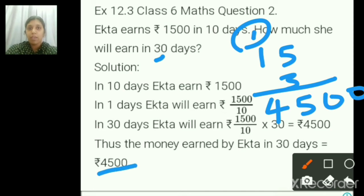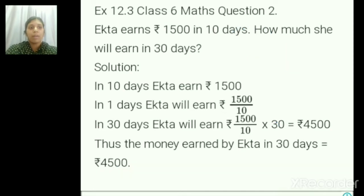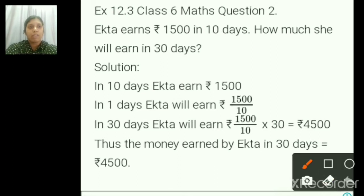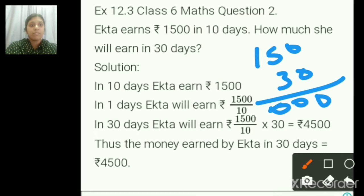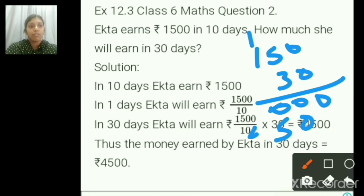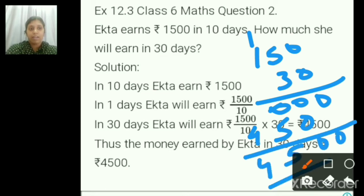Either this way you can multiply, or you multiply 150 into 30 directly — whichever way you are comfortable you can do. So 150 into 30: zero, zero, zero — again 3 table you have to multiply — so zero, five, carry over 4 — you are getting 4500. This way also you can multiply.